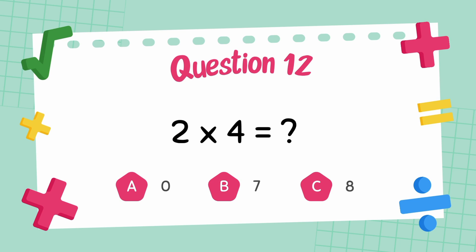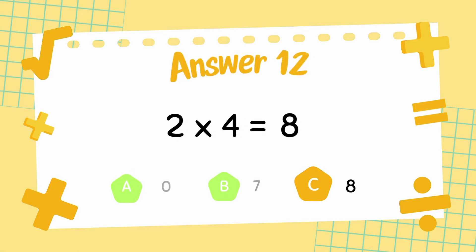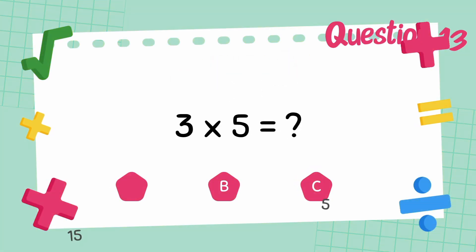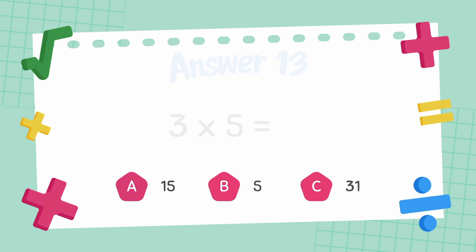What is 2 multiply 4? The answer is 8. What is 3 multiply 5? The answer is 15.